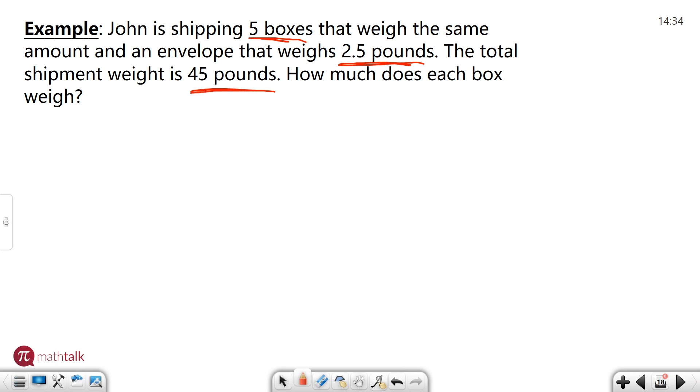So those are the key things that we need to include when we write our equation and how much does each box weigh? So let's kind of put these pieces together to form an equation and let's solve it. So we have five boxes, five let's say B is boxes that needs to be our variable plus we have this envelope that weighs two and a half pounds. We add them together we get our total weight which is going to be 45.